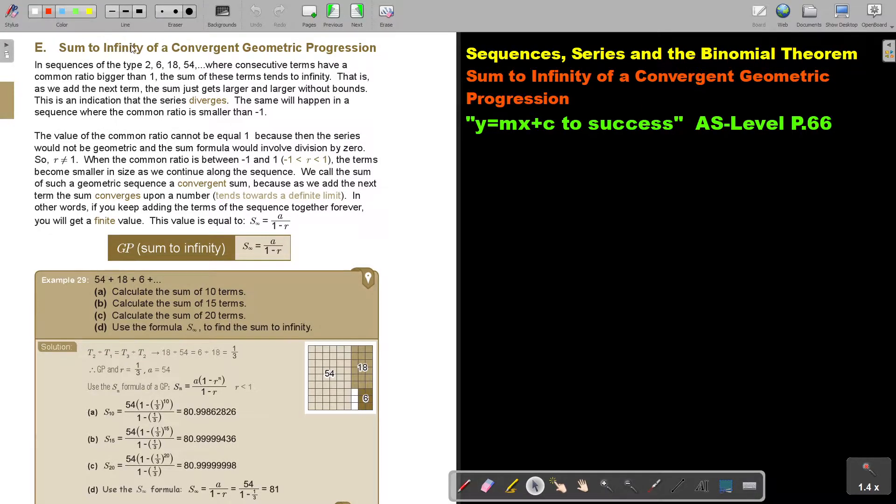The sum to infinity of a convergent geometric progression. In a sequence of the type 2, 6, 18, 54, where consecutive terms have a common ratio bigger than 1, the sum of these terms tends to infinity. That is, as we add the next term, the sum just gets larger and larger without bounds.